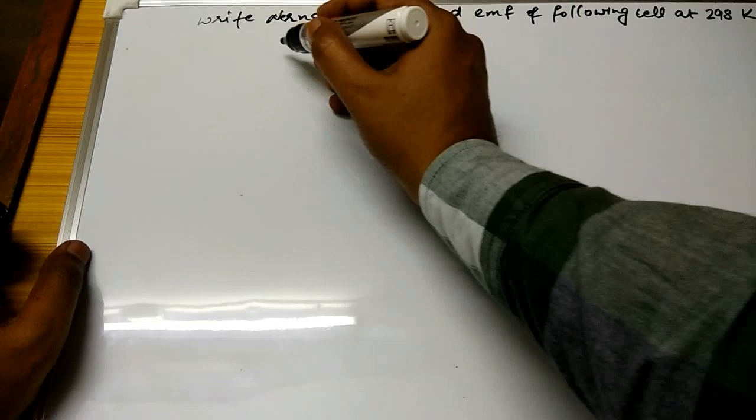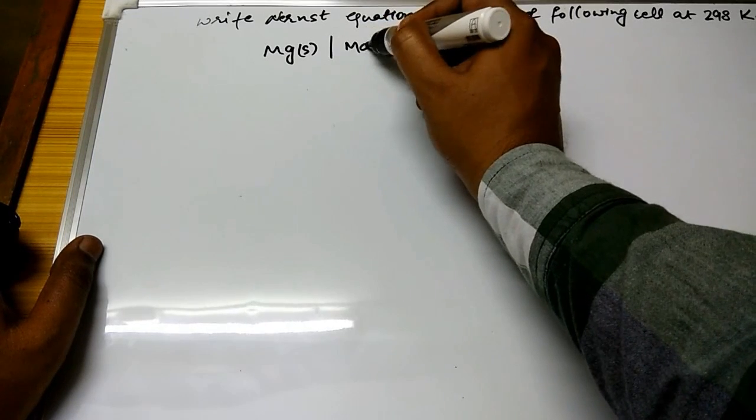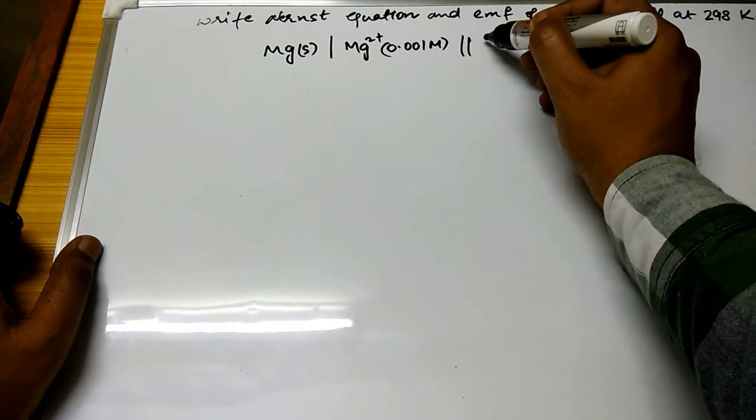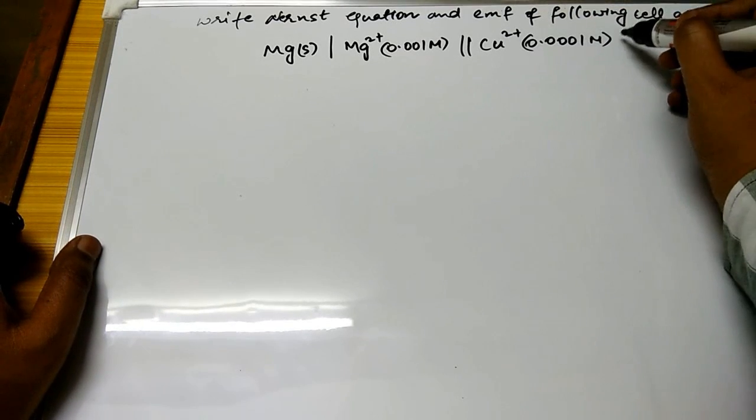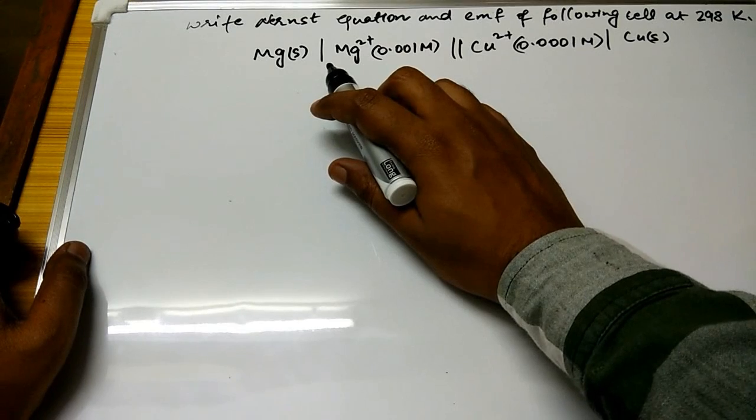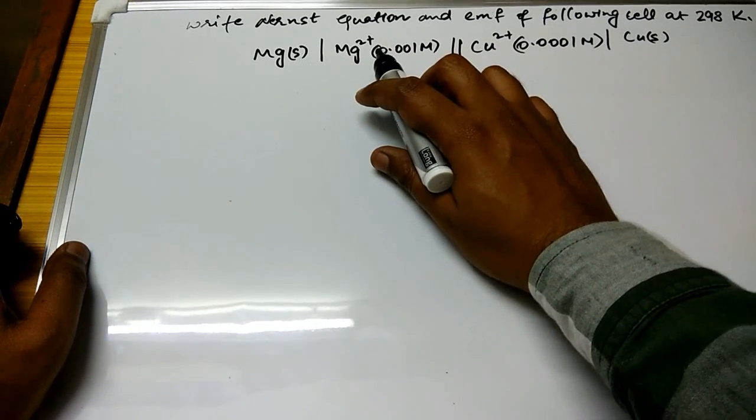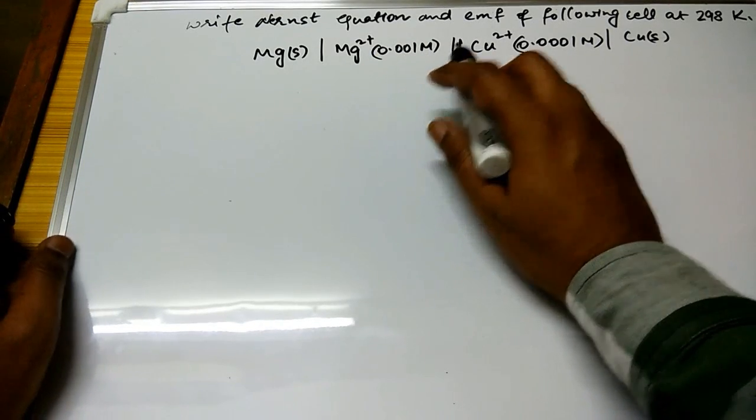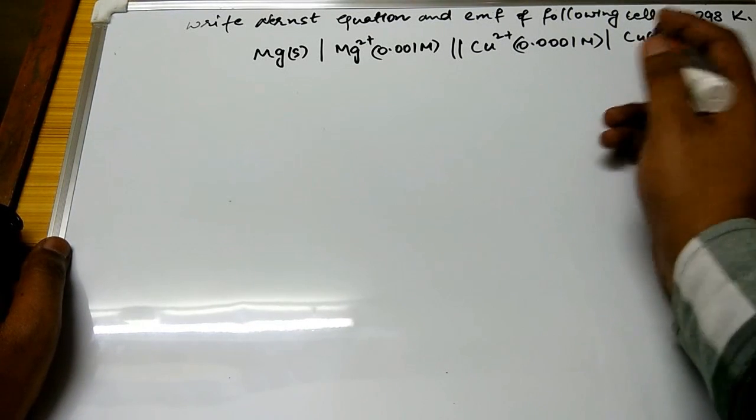So cell reaction is Mg solid | Mg²⁺ 0.001 molar. Now over here you need to understand that this is a cell formation where Mg and Mg²⁺, that means Mg²⁺ is just the cation of Mg solid which is having molarity of 0.001 molar. And there is a salt bridge between the two and Cu²⁺ is just the cation of copper solid.